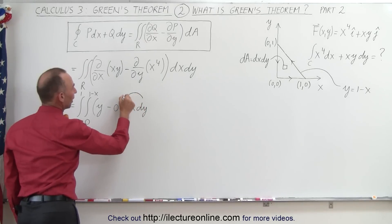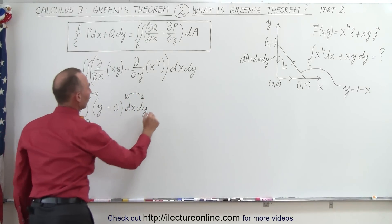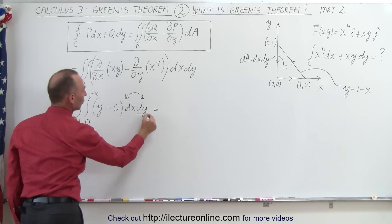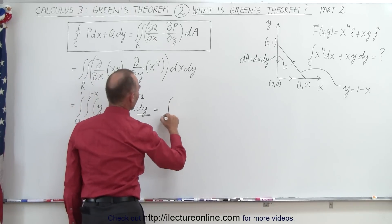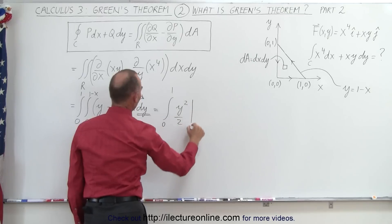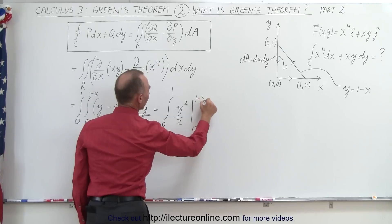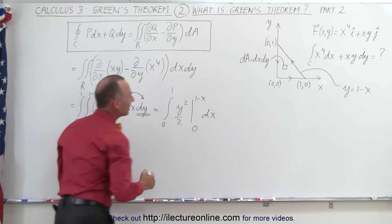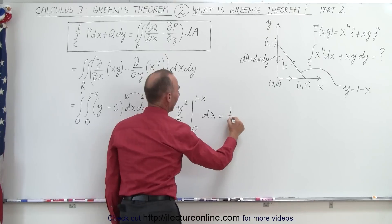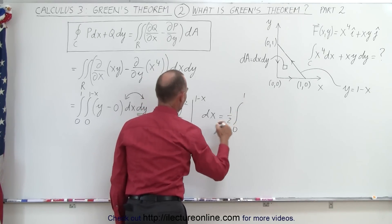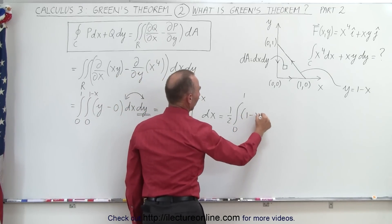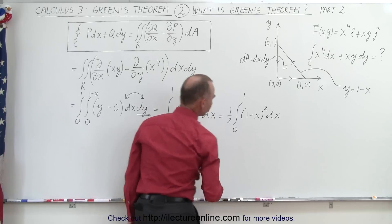We're going to do the y integration first, so interchanging the order: this is equal to the integral from 0 to 1 of y squared over 2, evaluated from 0 to 1 minus x, and we still have our dx left. Taking the one-half out, this equals one-half times the integral from 0 to 1; plugging in the upper limit we get (1 minus x) quantity squared dx.